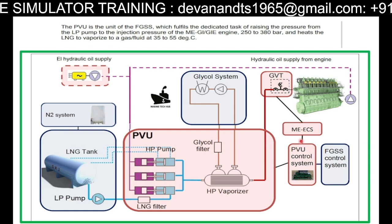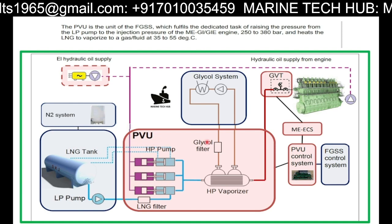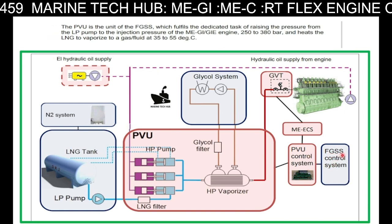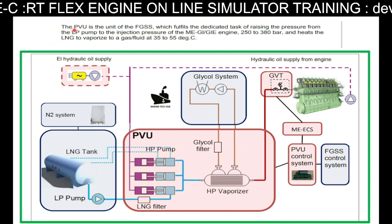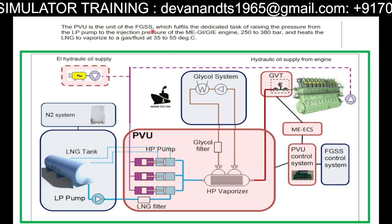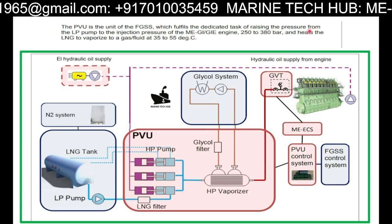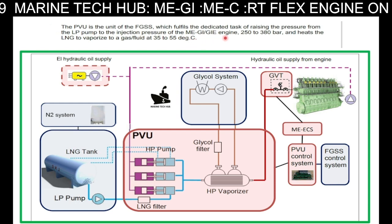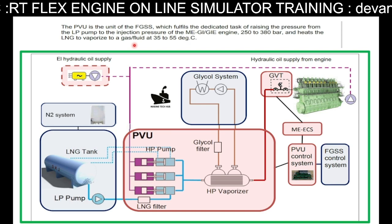This is again controlled by MECS — the engine control system. The whole system, PVU, is controlled by the PVU control system, and this is connected to FGSS — fuel gas supply system — which also has a control system. The pump vaporizing unit is the unit of the FGSS, which raises the pressure from the LP pump to the injection pressure of the MEGI engine — 250 to 380 bar.